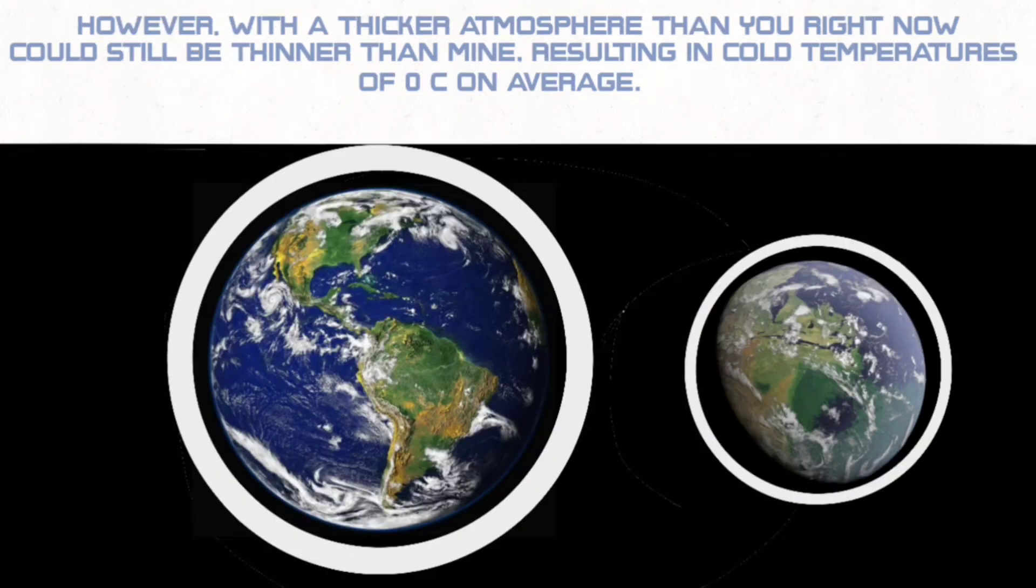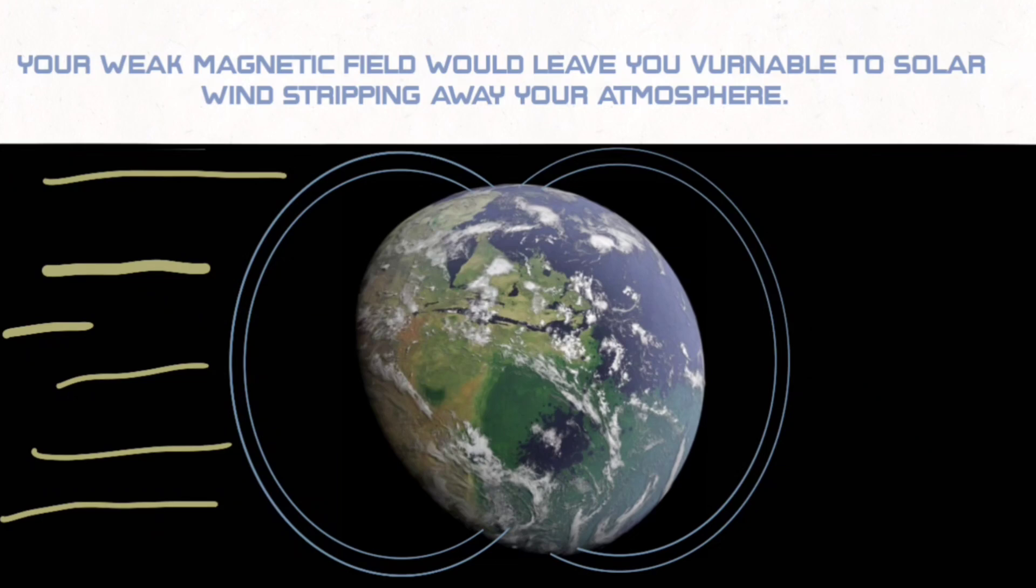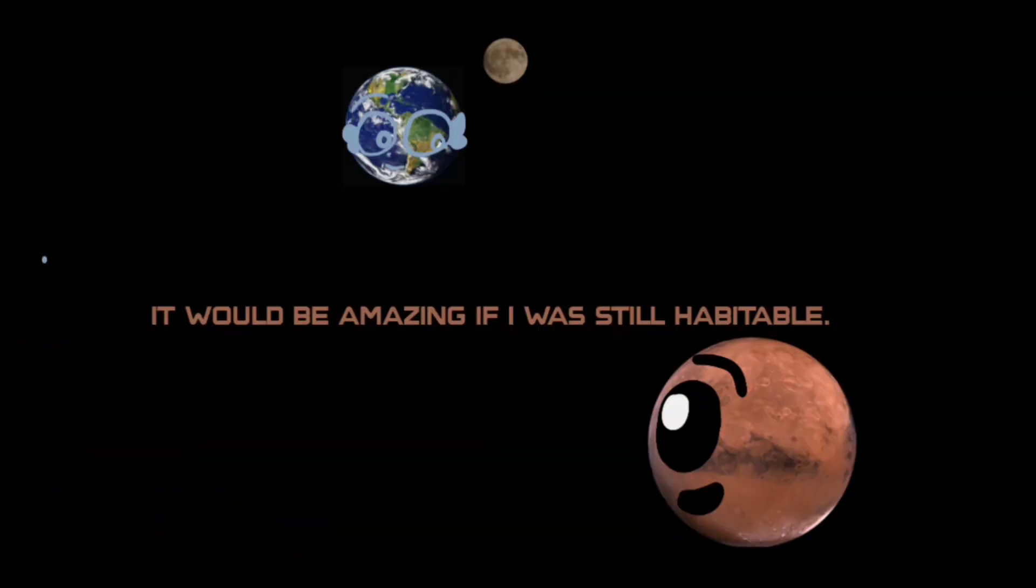However, with a thicker atmosphere than you have right now, but could still be thinner than mine, resulting in cold temperatures of 0 degrees Celsius on average. Your weak magnetic field would leave you vulnerable to solar wind stripping away your atmosphere. It would be amazing if me and Venus were still habitable.